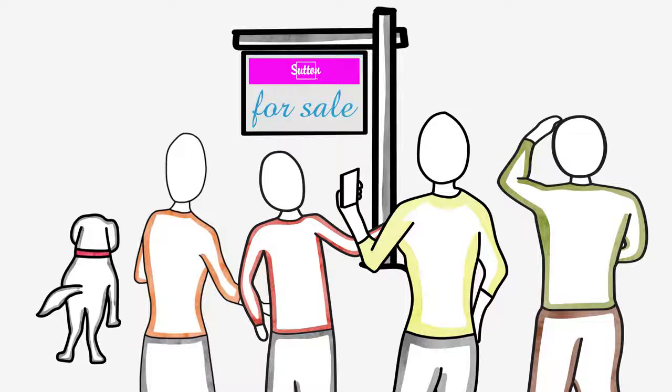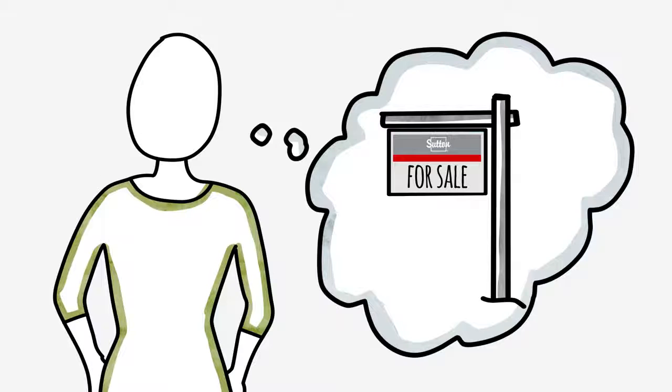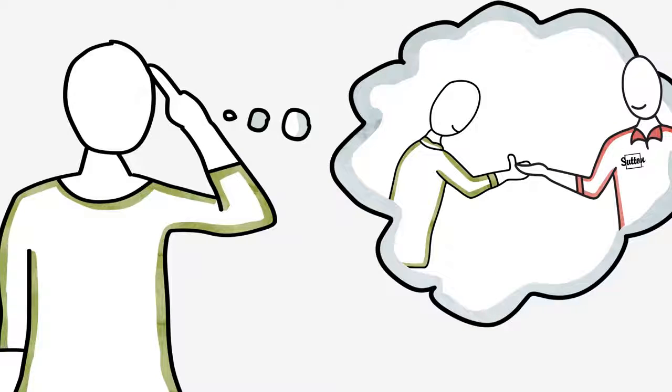The fact is that when people don't recognize a sign design, they don't know where to go to find more information about the home, and they might not be able to read the contact details. If Natalie's signs were a trusted Sutton design, people passing by would instantly know to check Sutton.com for more info, and they would be able to quickly find the name and number on the front. And even better, they would instantly trust Natalie because they would know she's part of a national company.